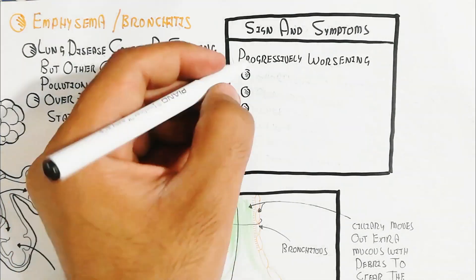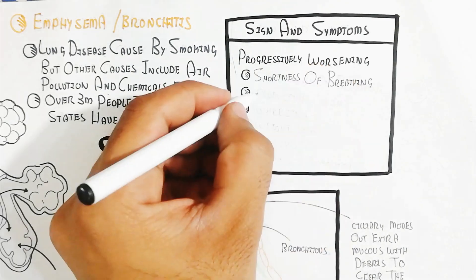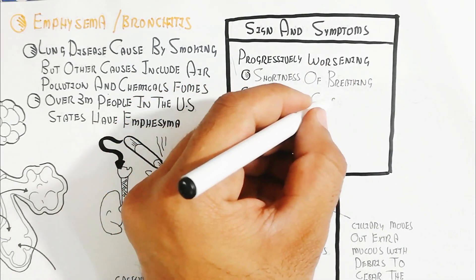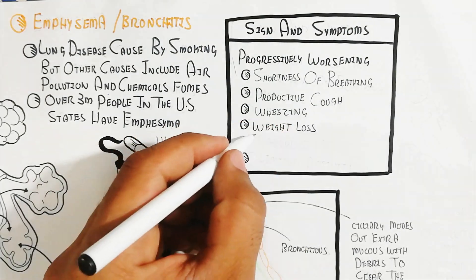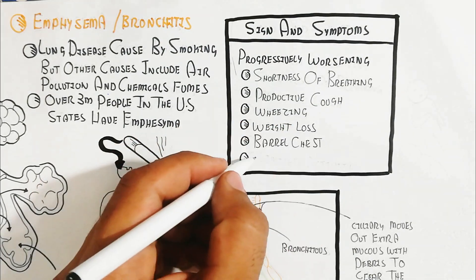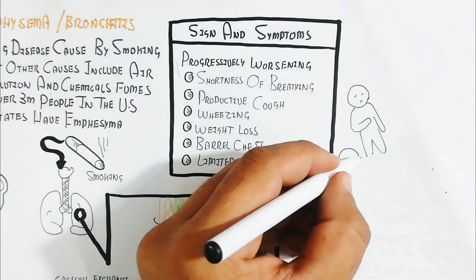Symptoms include progressively worsening shortness of breath, productive cough, wheezing, weight loss, barrel chest, and limited activity.